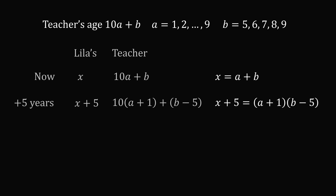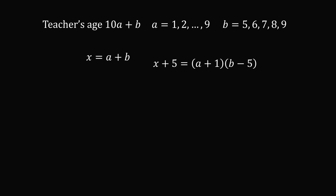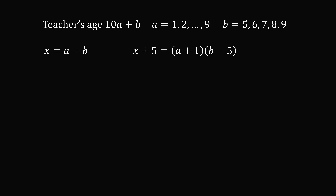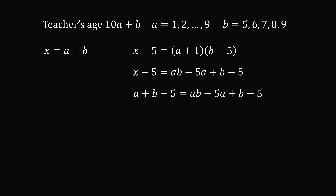We now focus on these equations. Expanding the binomial on the right-hand side: x plus 5 equals ab minus 5a plus b minus 5. Substituting x equals a plus b and simplifying, we get 10 equals ab minus 6a, which can be factored as 10 equals a multiplied by (b minus 6).